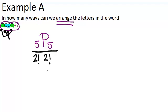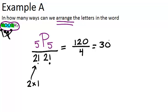Now we just have to calculate this and we'll get our answer. You can use your calculator or you can do it out by hand. 5P5 is 120. Two factorial just means two times one, which is just two. So on the bottom we have two times two, which is four. And 120 divided by four is 30. So that will be our answer. There are 30 different ways that we could arrange the letters in the word tooth to form a new word.